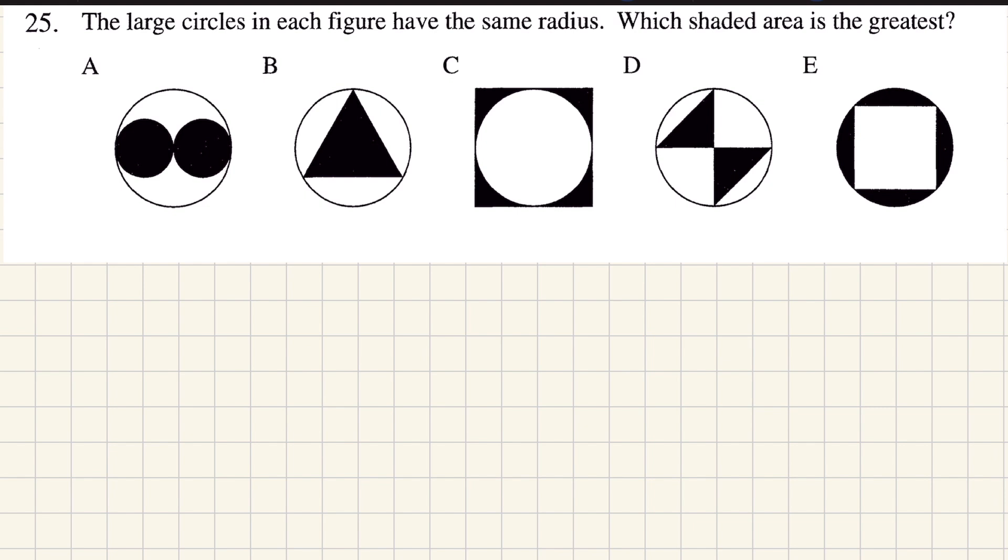If we wanted to know which one's the biggest, you just need to run an algorithm where you compare A to B, you find out which one's bigger, let's say it was A, then we compare A to C, then we find out which one's bigger, let's say it was C. Then we just need to compare C to D, let's say C was still bigger, and then C to E. And if C is still bigger, then we know C is the biggest.